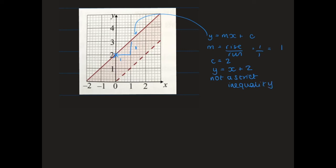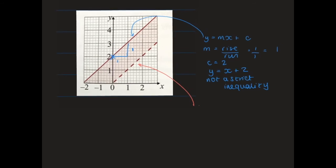Looking at the second line, it's also of the form y equals mx plus c. The gradient is again 1 over 1, which equals 1. I can also observe that the two lines are parallel, confirming equal gradients. The y-intercept goes through the origin, so c equals 0, giving the equation y equals x.